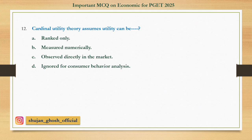Question number twelve: Cardinal utility theory assumes utility can be — option A: ranked only; B: measured numerically; C: observed directly in the market; D: ignored for consumer behavior analysis. Answer: measured numerically.